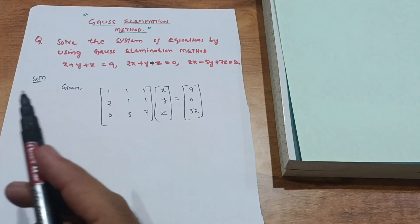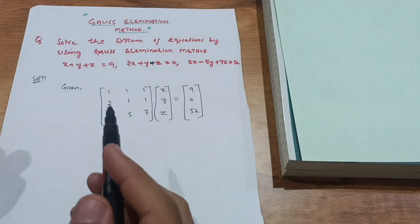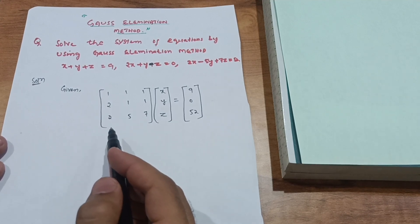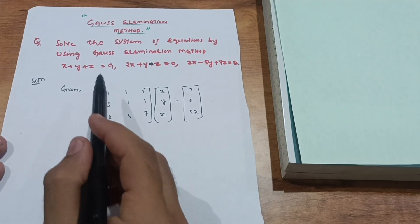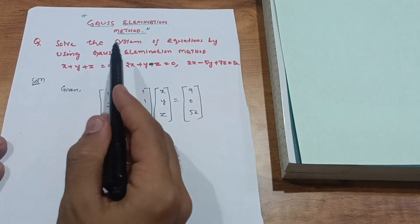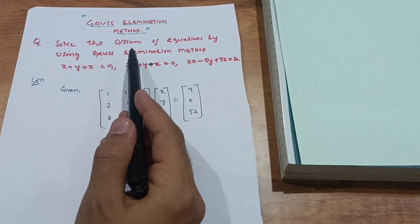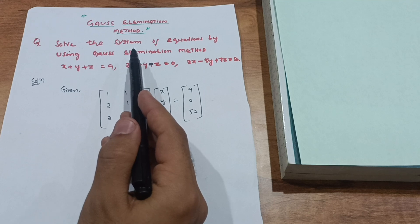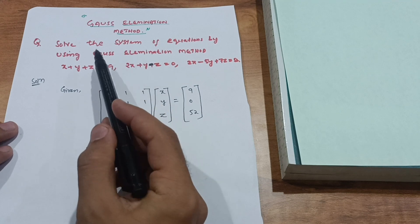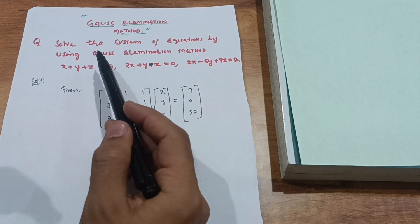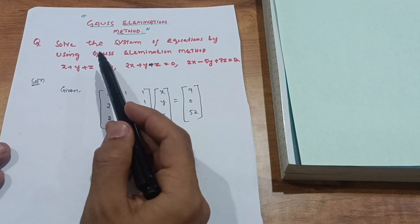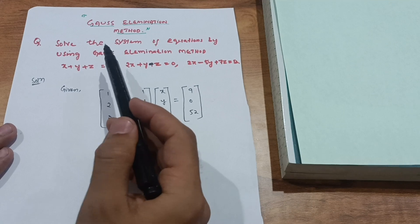Hello everyone, welcome back to my channel. Today I am covering another important topic for video examination: the Gauss Elimination Method. This is a topic of linear algebra where you deal with matrices. It is a seven-mark question in the examination. Gauss elimination method is a direct method of solving a system of equations.